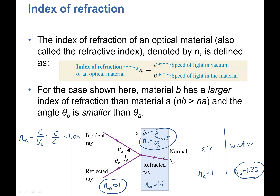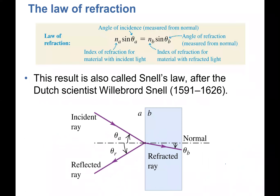Now let's look at what happens when light goes from a medium with one index of refraction to another. We can see that light bends toward the normal — but is this always the case? Does the direction of bending depend on going from more dense to less dense? The next few slides will help us understand how the direction changes depending on whether light goes from lower to higher index of refraction or from higher to lower.